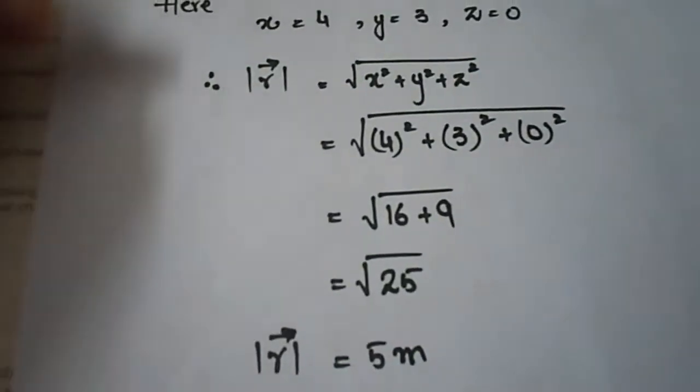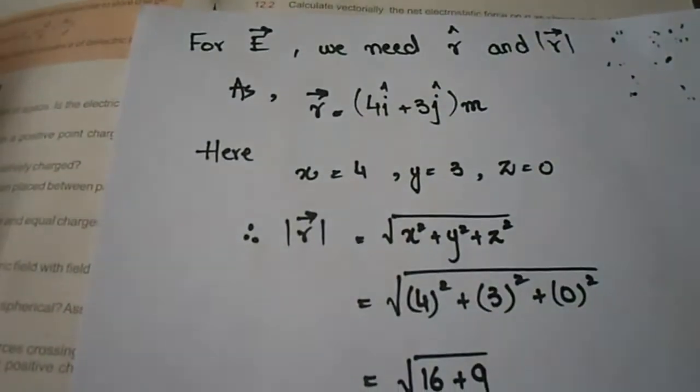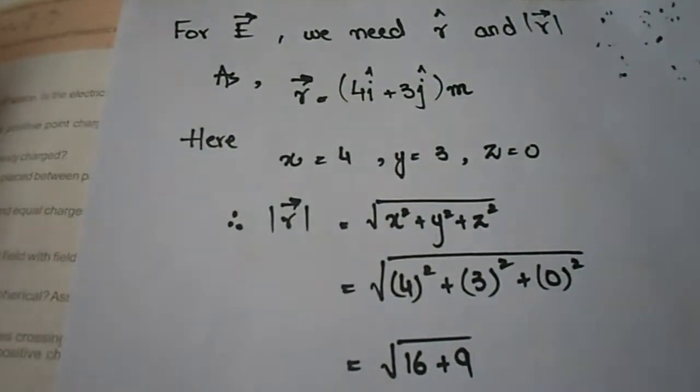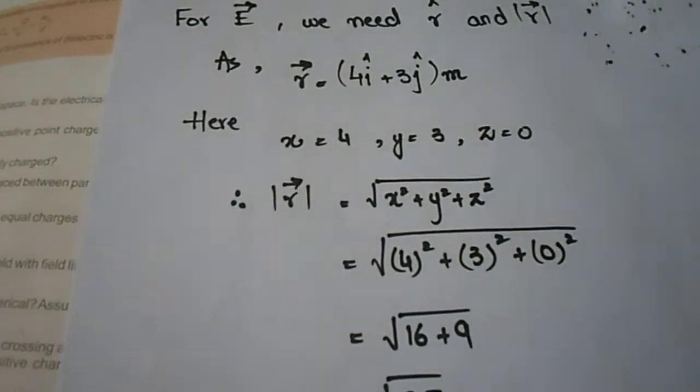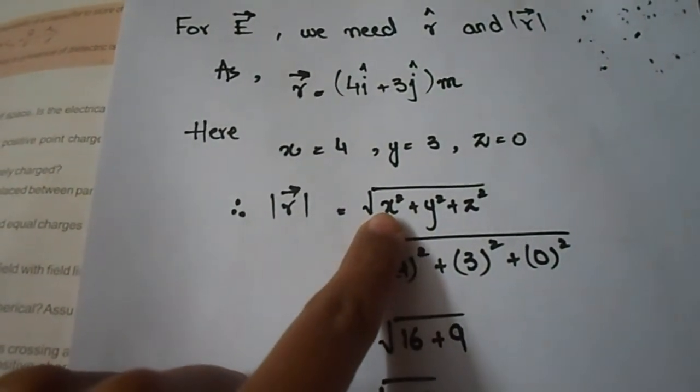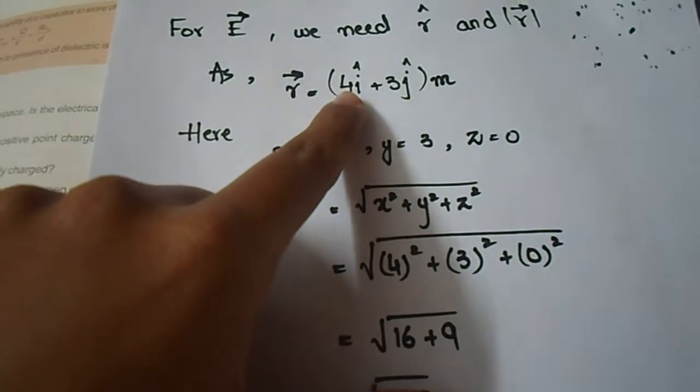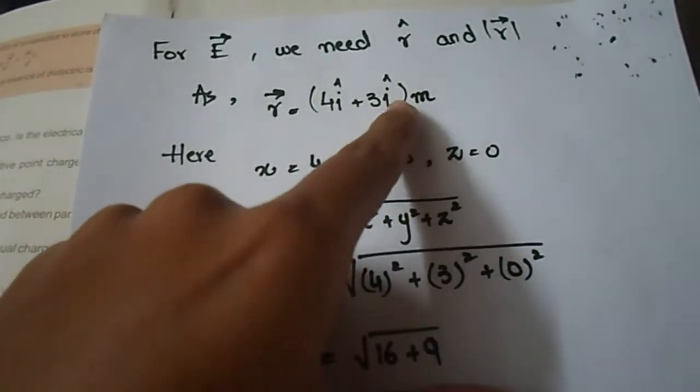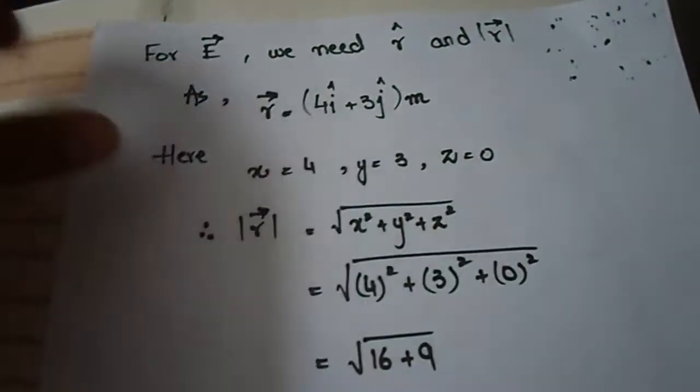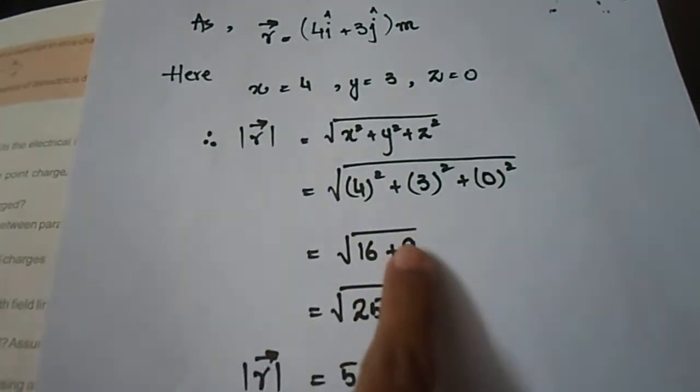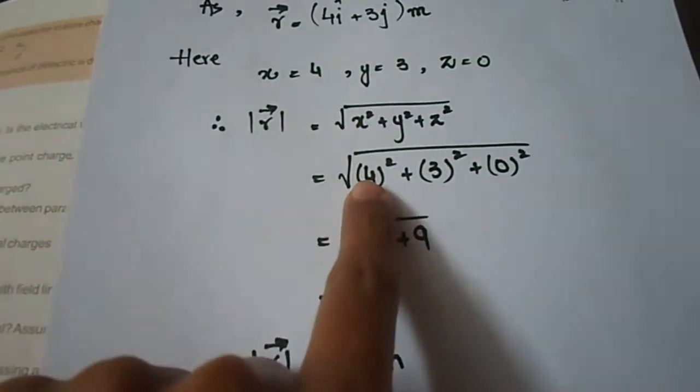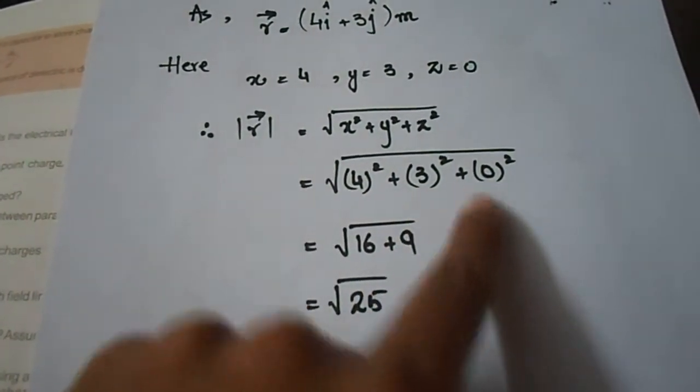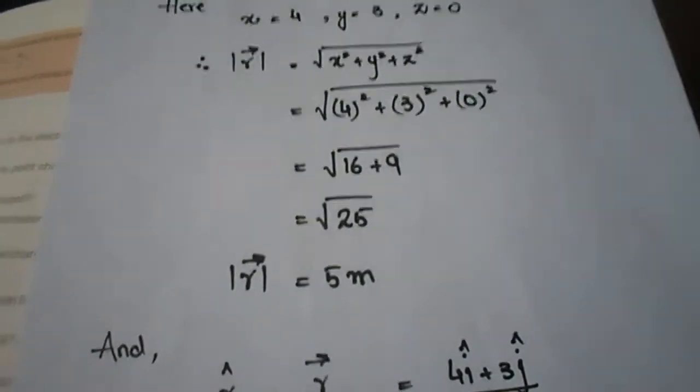Next we need vector r magnitude and unit vector r. First of all, the formula for magnitude is the square root of x coefficient squared plus y coefficient squared plus z coefficient squared. Here x is 4, y is 3, and z is 0 because z axis is not in this case.